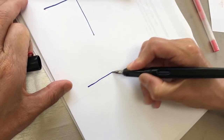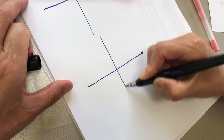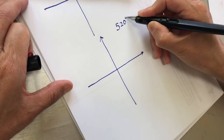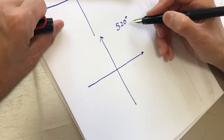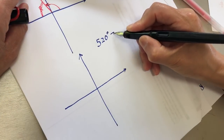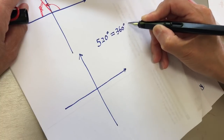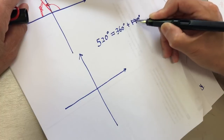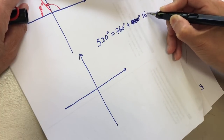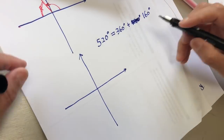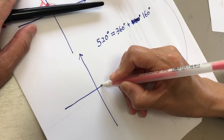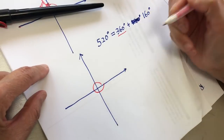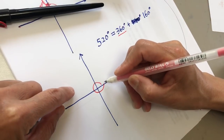Now we do another one. Let's say it's 520 degrees. So 520, we can see it as 360 plus 160. Which means there is one full rotation — one rotation is 360 — and then another 160 degrees.